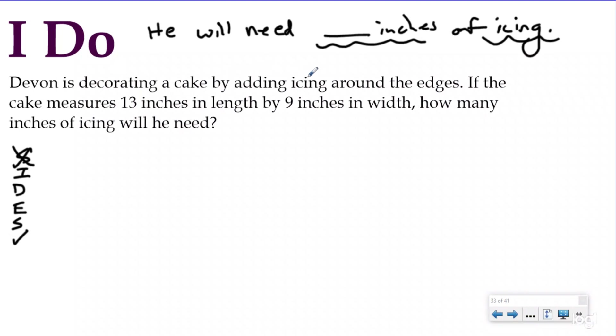So it says, Devon is decorating a cake by adding icing around the edges. All right. That's a keyword that's telling me I might be doing perimeter. If I'm going around the edges, that is the definition of perimeter. The cake measures 13 inches in length and 9 inches in width. I'm identifying these not because they're numbers, but because they had to do with my statement. How many inches of icing will he need? So my statement was he will need blank inches of icing. I know that he's going around the edges of a cake that's going to be a rectangle because they only gave me two dimensions. How many will he need?